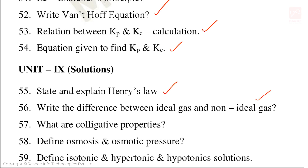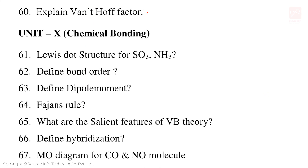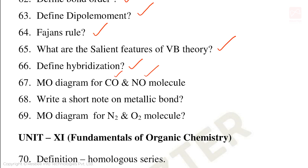Also important in Unit 9 solutions: isotonic, hypertonic, and hypotonic solutions, and explanation of van't Hoff factor. Unit 10: Chemical Bonding — important 2 mark and 3 mark questions include Lewis structure for SO3 and NH3, define bond order, define dipole moment, Fajan's rule, salient features of VB theory, define hybridization, and molecular orbital diagram for carbon monoxide and NO molecule.